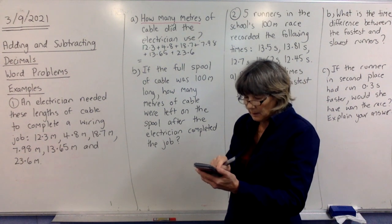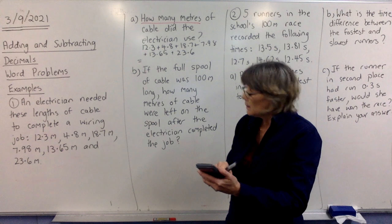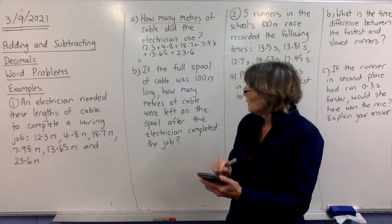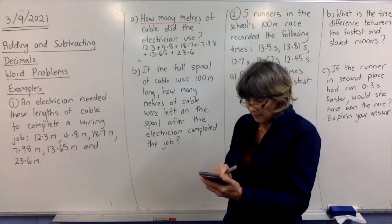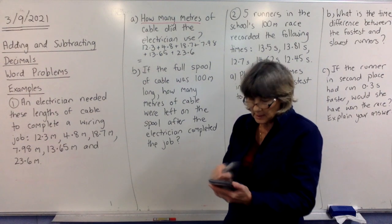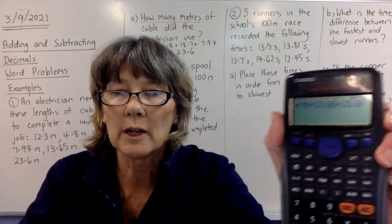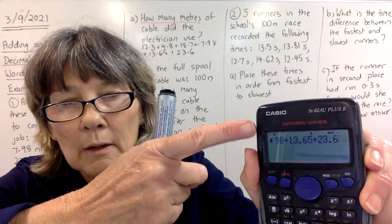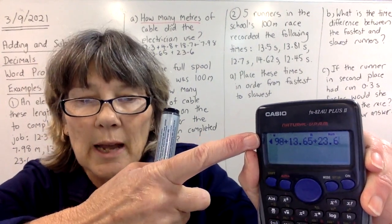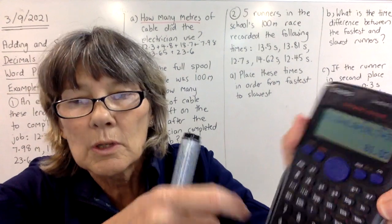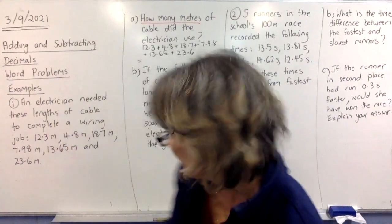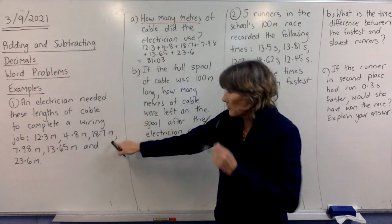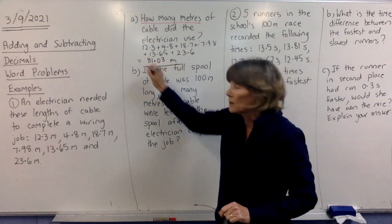Okay. So, we have 12.3 plus 4.8 plus 18.7 plus 7.98 plus 13.65 plus 23.6. And you won't have it all fitting on. You can only really see the last few things you've done. That's what the arrow there is for on the screen. It says there's more stuff on that side. But that's okay. You can see the last bit I typed in. Press equals. 81.03. So, I'm going to write down our answer. 81.03. And all of them were in metres. So, our answer is in metres. And that's the end of the question.